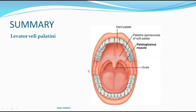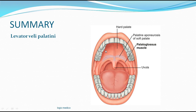In summary, levator veli palatini is a muscle of the soft palate. It causes elevation — hence the name 'levator.' It begins from the eustachian tube, and upon contraction it elevates the soft palate and also dilates the eustachian tube. It cuts off the connection between the nasopharynx and the oropharynx, and its nerve supply is the 11th cranial nerve — the accessory nerve.